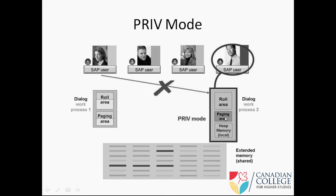In case this particular dialogue work process is used by someone and it went to heap priv mode - if it goes to privilege mode, nobody can use it. So if all the work processes go to privilege mode, then what will happen? No other requests can be served - that is a very bad situation.